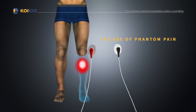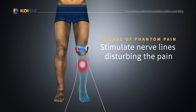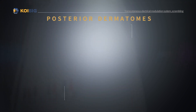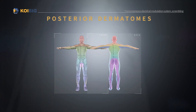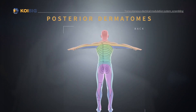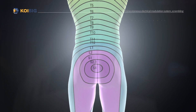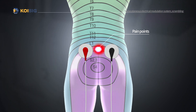In the case of a phantom pain symptom, it can be stimulated along the nerve line to disturb the pain, thereby removing the pain. In the same way, it is effective to attach the electrodes of PainBlock along the dermatome line representing the skin area of the spinal nerve.